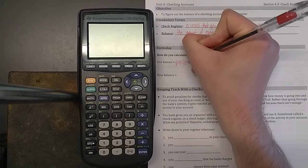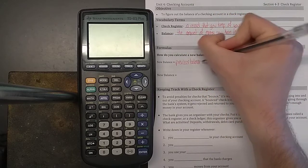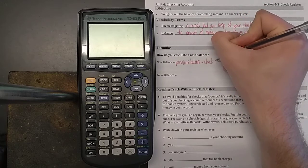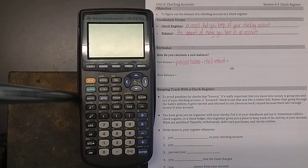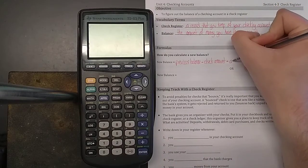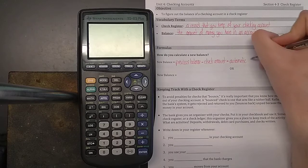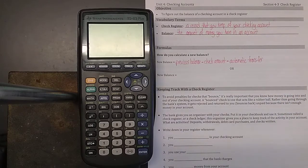You take your previous balance, and if you are writing a check to someone, you subtract that check amount. Or if you're making an automatic transfer to someone, like you're just directly putting money into their account without writing a check, it's called an automatic transfer. If you're taking money out of your account to do that, then that would also get subtracted. So that's if you are writing a check or if you're sending money to someone else.